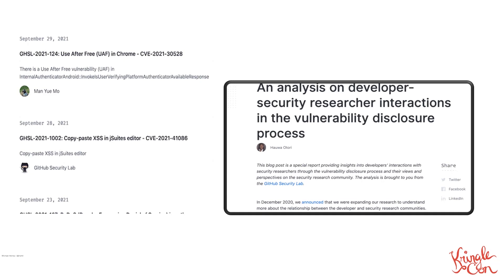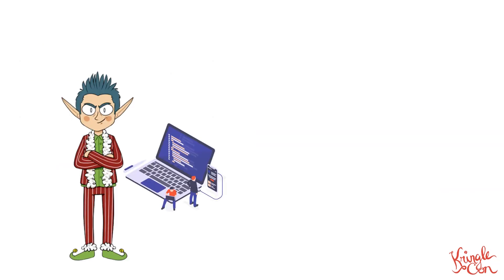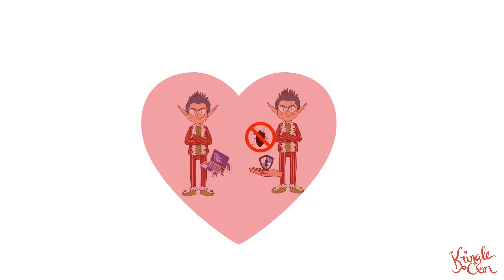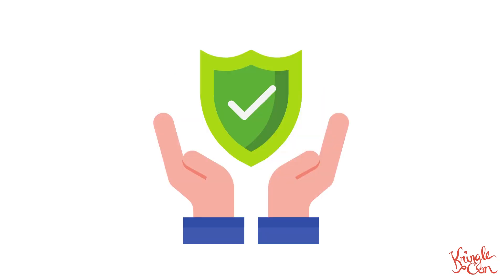Our internal research of the vulnerability disclosure process says that we could improve open source software security if we enable maintainers — the developers who build and maintain open source projects — and reporters, that I may sometimes call security researchers. They are the ones who report security vulnerabilities to maintainers. If we get these two personas to interact and collaborate with each other more efficiently, we can achieve the shared goal of getting good security fixes.